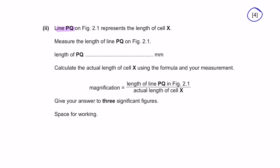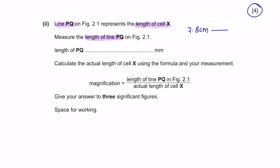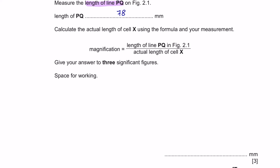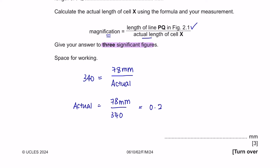Part 2: Line PQ represents the length of cell X. Measure the length of line PQ using a ruler starting at 0 — I got 7.8 cm, which converts to 78 mm. Part 3: Calculate the actual length of cell X. The magnification provided is 340. Substituting into the formula: 78 mm ÷ 340 = 0.229 mm, given to 3 significant figures. If the unit is not given, do not forget to include it in your answer.